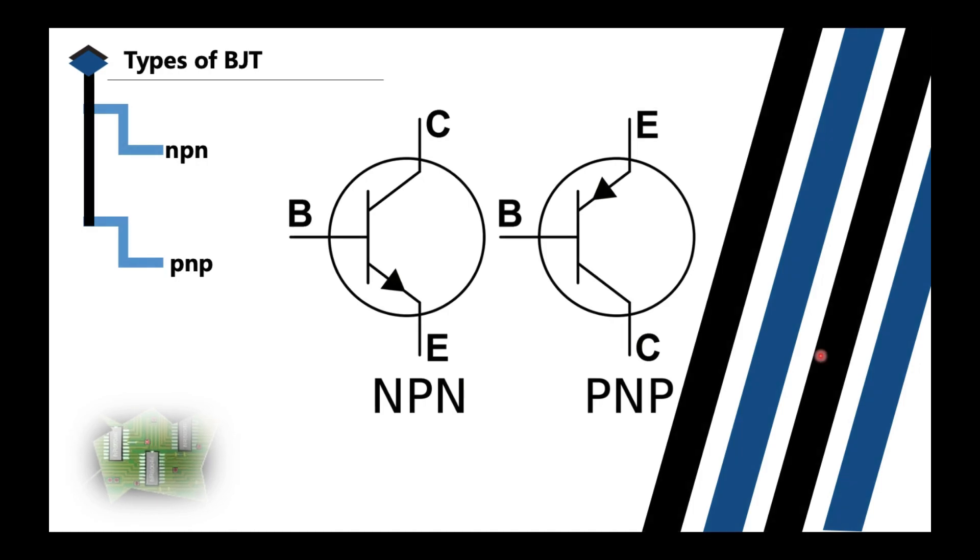Moving on to the types of bipolar junction transistor, we have two types: you have the NPN and the PNP. NPN because we form it using two N-type and one P-type. And PNP because we form it using two P-type and one N-type. This is the schematic symbol of NPN and this is the schematic symbol of PNP.